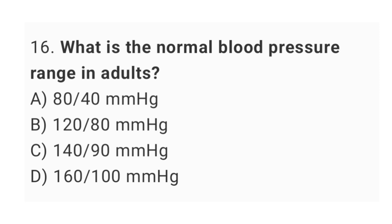Question number 16: What is the normal blood pressure range in adults? The right answer is option B: 120 over 80 mmHg.